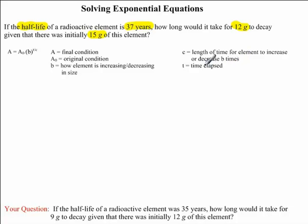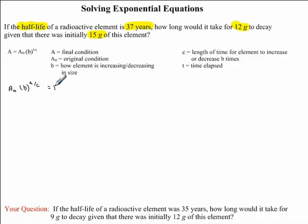Now we're going to substitute our values into this equation. We'll rewrite it as: a₀ · b^(t/c) = a. A₀ was the original condition — the initial mass of the element — and we were told that was 15 grams. So we substitute 15 in for a₀.